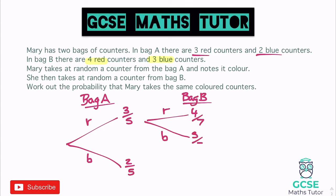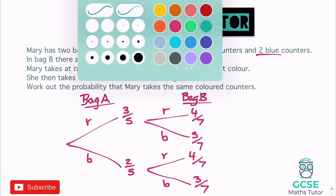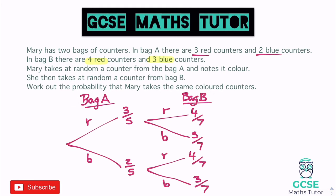We could also have taken a blue from bag A, and again there'd be a red or blue from bag B. Nothing changes — it's still 4/7 and 3/7. Both sets of second branches are the same because it's an independent event. If nothing in the question states that the probabilities change, we always assume they stay the same.